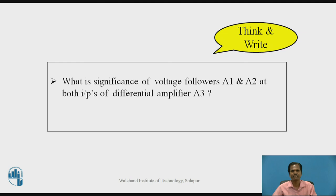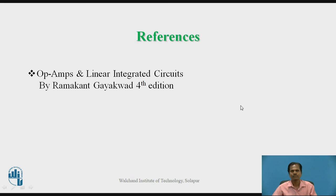Students can pause the video here and think about this question: What is the significance of voltage followers A1 and A2 at both inputs of differential amplifier A3 acting as an instrumentation amplifier? Op-amps A1 and A2 acting as voltage followers provide very high input resistance and low output resistance. They prevent the loading effect on the electrical bridge, so maximum voltage is provided to the differential amplifier without drawing current from the electrical bridge.